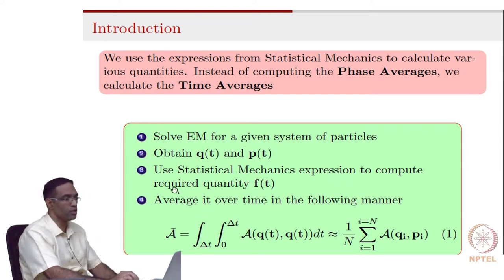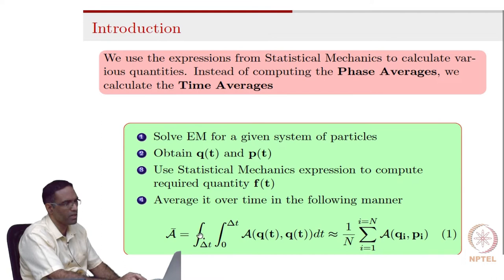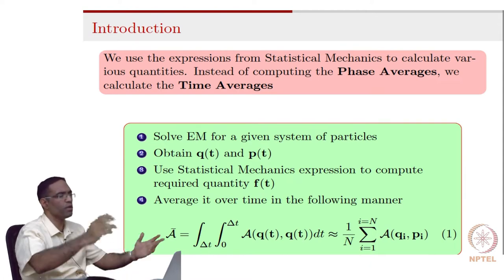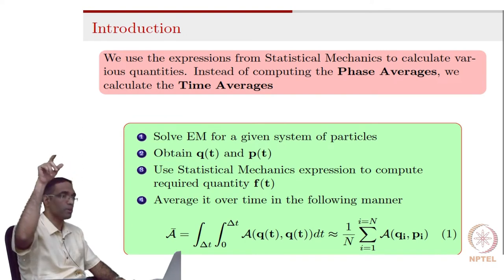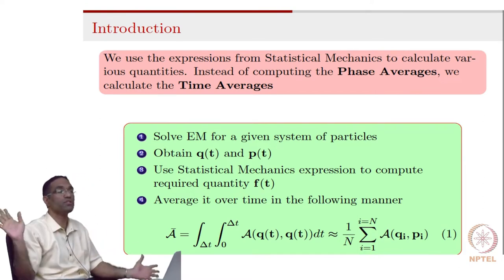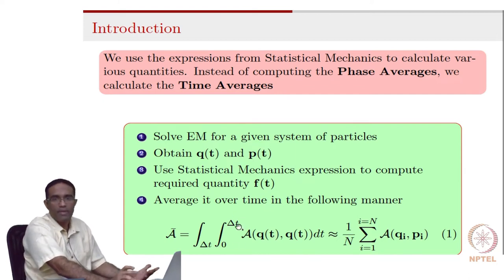The manner in which you do it is given by the following formula. This should be 1 over delta t - the limit as delta t tends to infinity is what I intended to write, but I made a mistake there. So instead, it is an integral from t naught to t naught plus delta t for very large delta t. Delta t is a very large quantity, which is what is the process of time averaging.